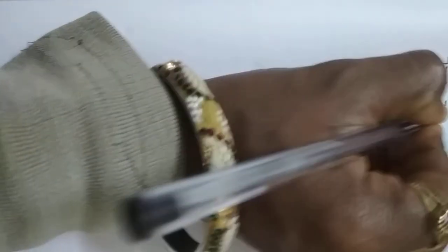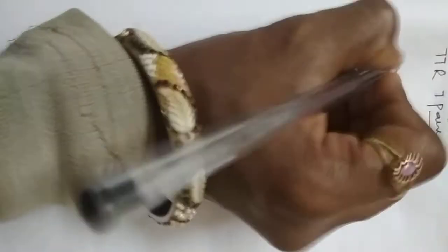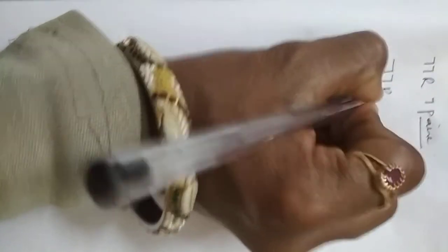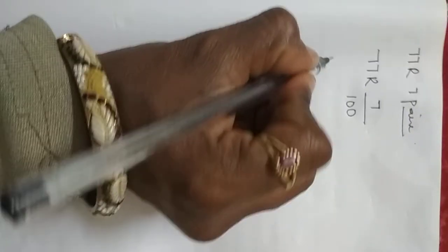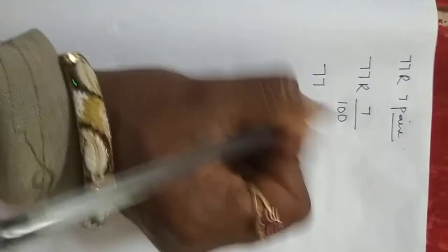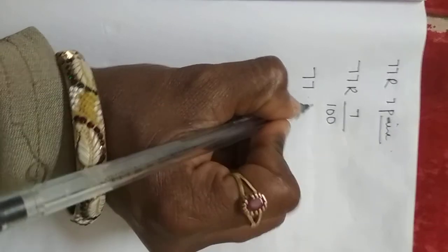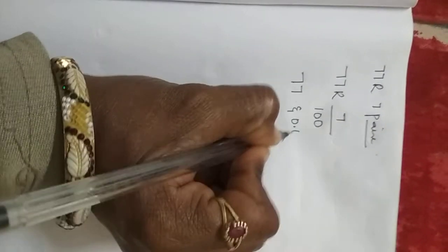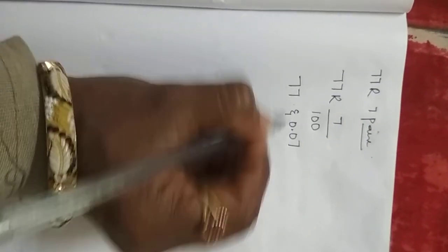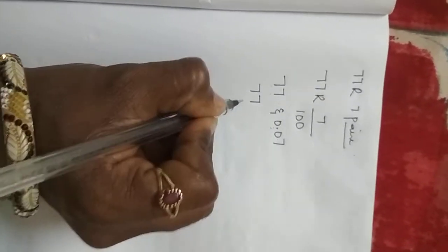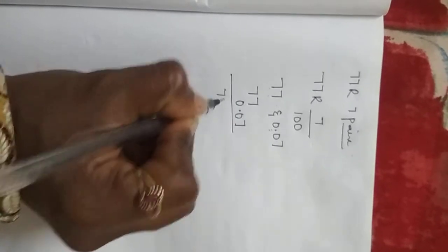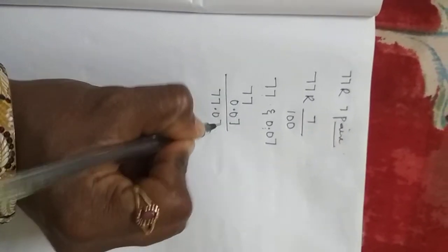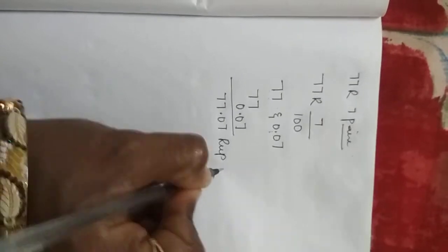77 rupees 7 paisa. So we will convert this paisa into rupees. 77 rupees. How to convert paisa into rupees? 7 by 100. 7 by 100 means 0.07. Now you add both: 77 plus 0.07. How you will write? 77.07 rupees.